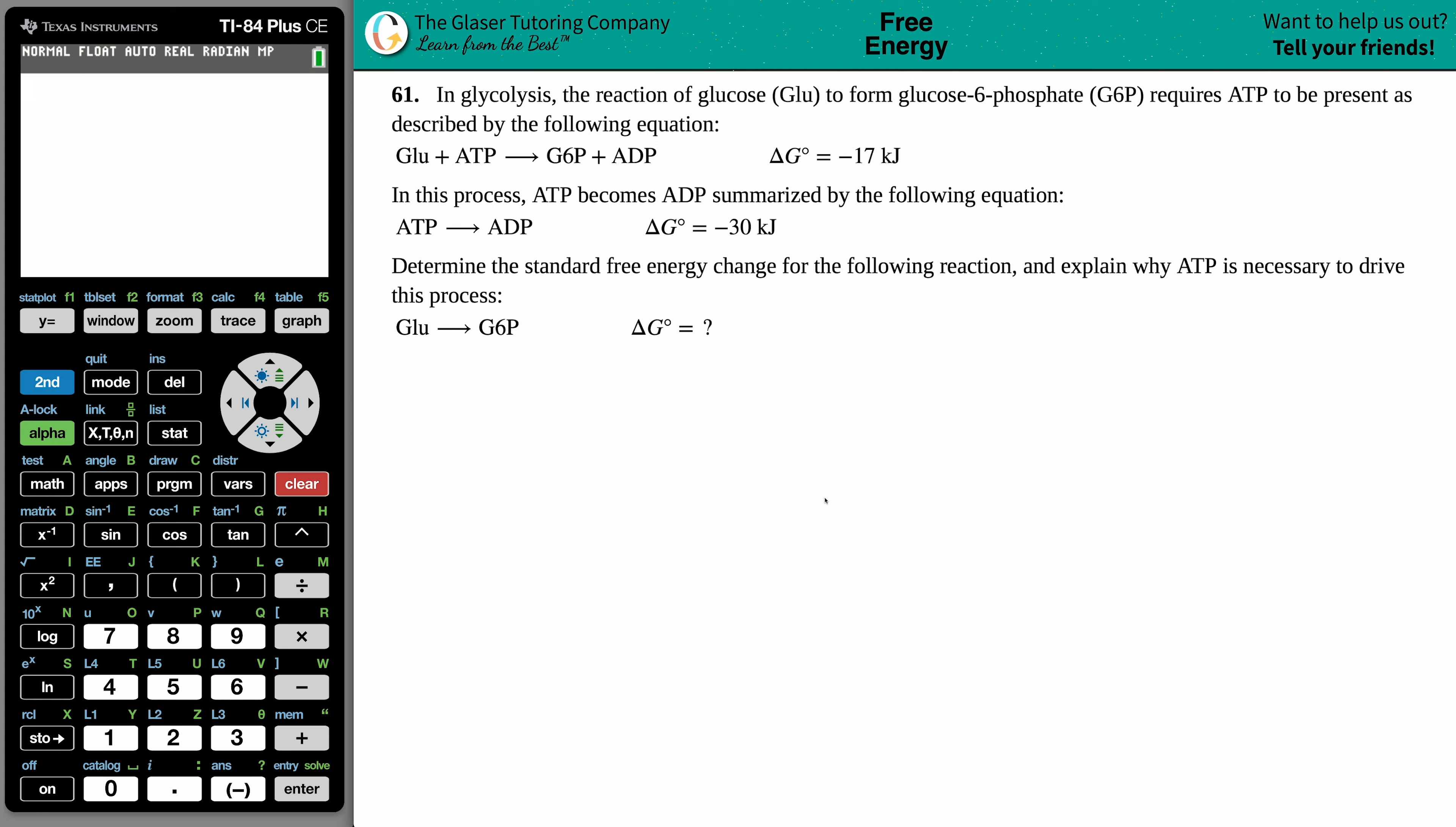Number 61. In glycolysis, the reaction of glucose, which we'll know as Glu, to form glucose-6-phosphate, which we'll know as G6P, requires ATP to be present as described by the following equation. So we have glucose plus ATP, which is basically energy, will yield us glucose-6-phosphate plus ADP. And this reaction at standard, because there's a notch here, equals negative 17 kilojoules.